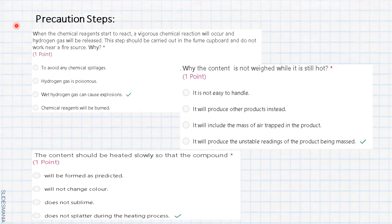For the precaution step, you can get some hints from the pre-lab question. The first one is regarding the reaction: we have to conduct it in the fume cupboard and do not work near a fire source. Why? Because the reaction between zinc and hydrochloric acid will release hydrogen gas, so the wet hydrogen gas can cause explosion.